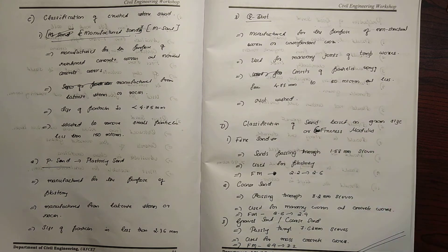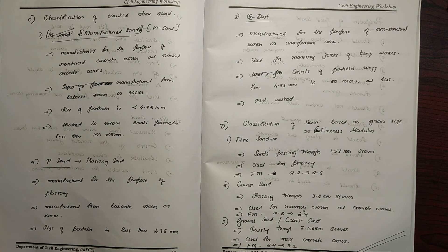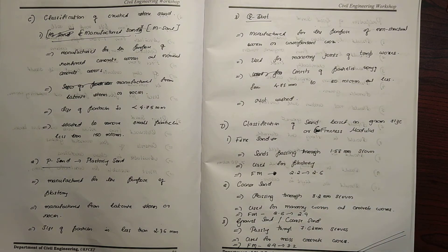Core dust is manufactured for the purpose of non-structural works. It is not used for washing. It is used for masonry joints of temporary works. Core dust consists of particles varying from 4.25 to 50 micron and it is not washed.